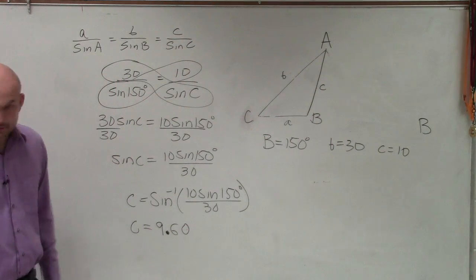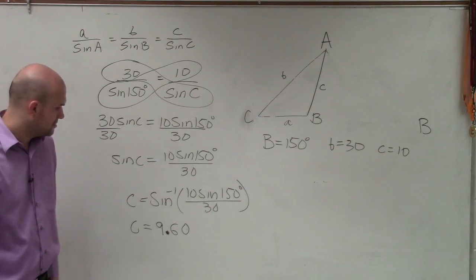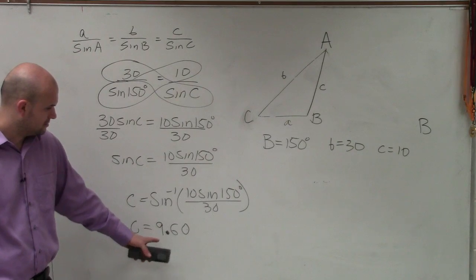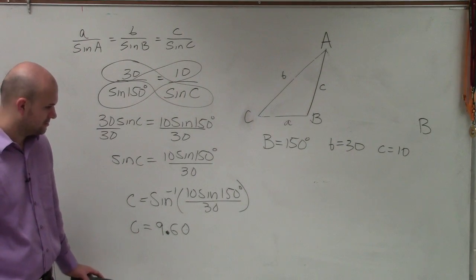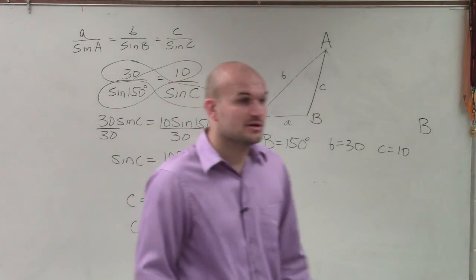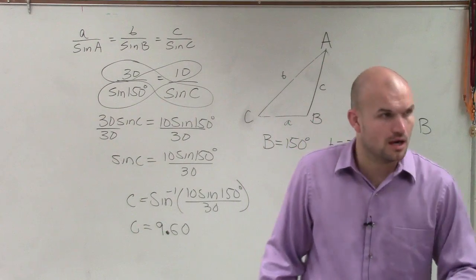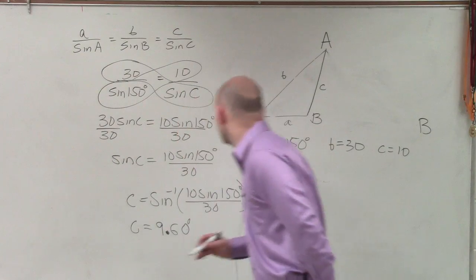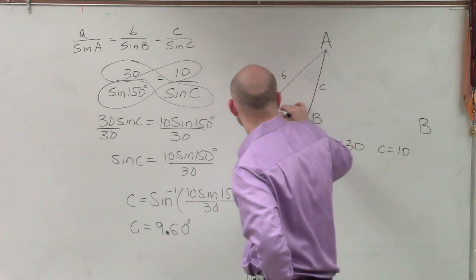Student question: What if I cross out the sine? Well, I'd have to look at your answer — I'm not sure. Any questions from here? We're not done. That result, 9.60, is a degree value, so C is 9.60 degrees.